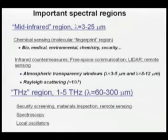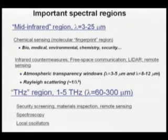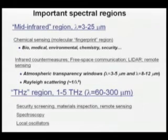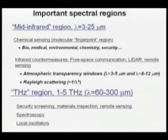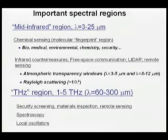I want to distinguish two important spectral regions. The mid-infrared, roughly from 3 to 25 microns, is the so-called molecular fingerprint region where most molecules have their absorption features. Applications are quite wide-ranging — from biomedical to environmental chemistry to security, infrared countermeasures, free-space communication, LiDAR, and remote sensing, particularly within the two important atmospheric windows. Then the terahertz region, from 60 to 300 microns — there is a gap for compact semiconductors where light does not propagate, called the restrahlen band, or polariton gap.